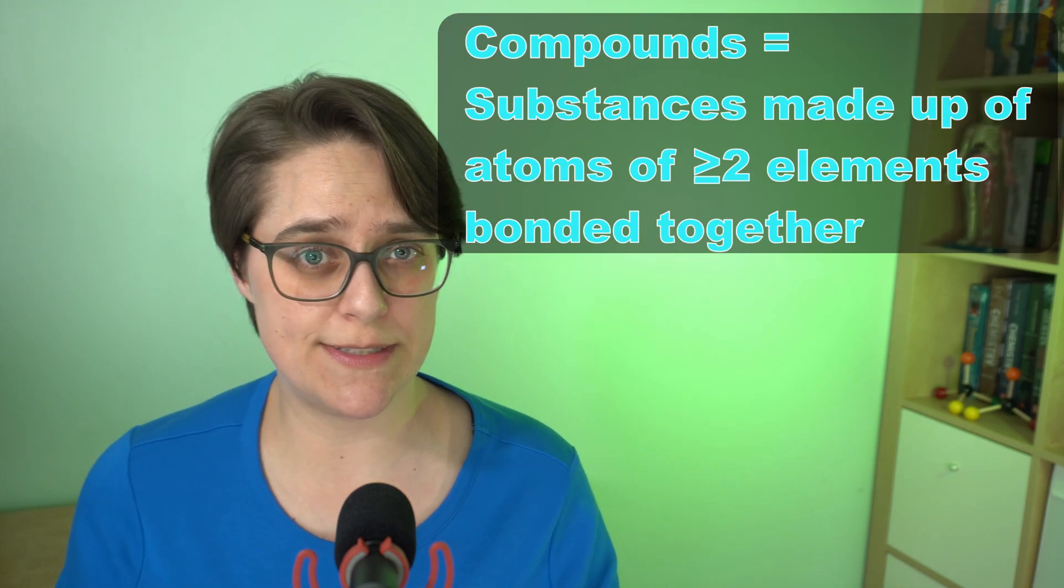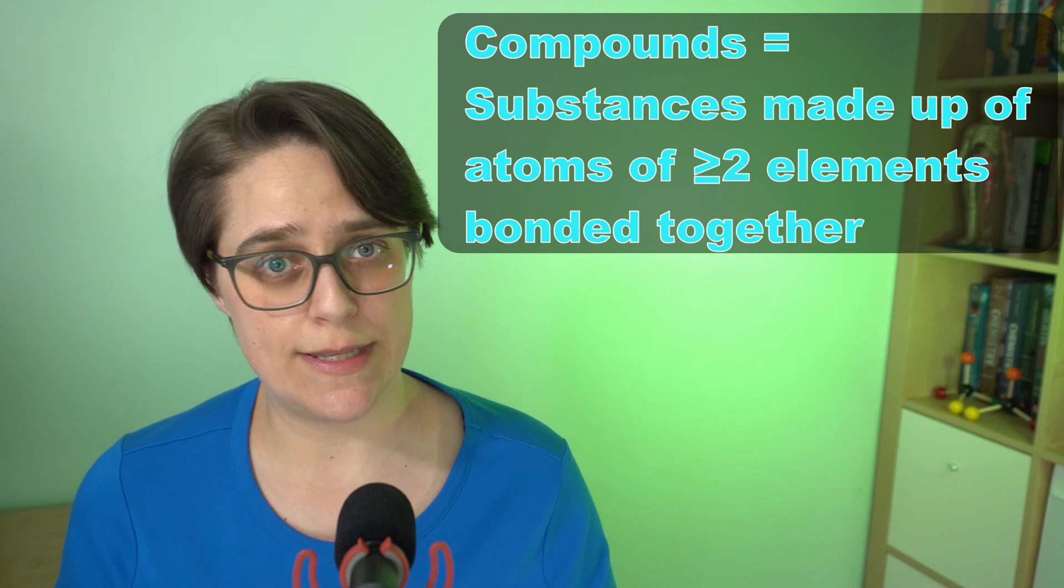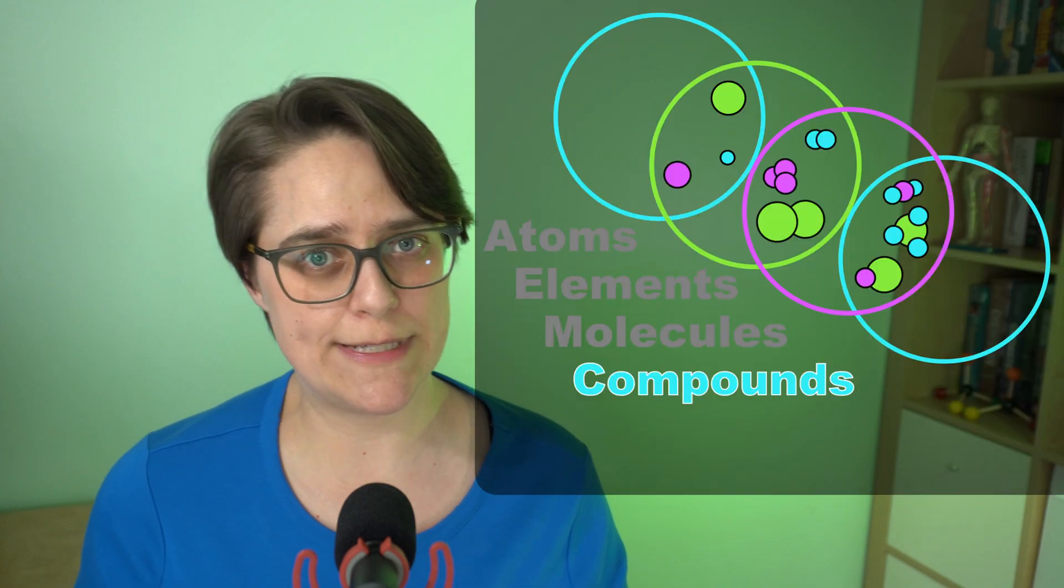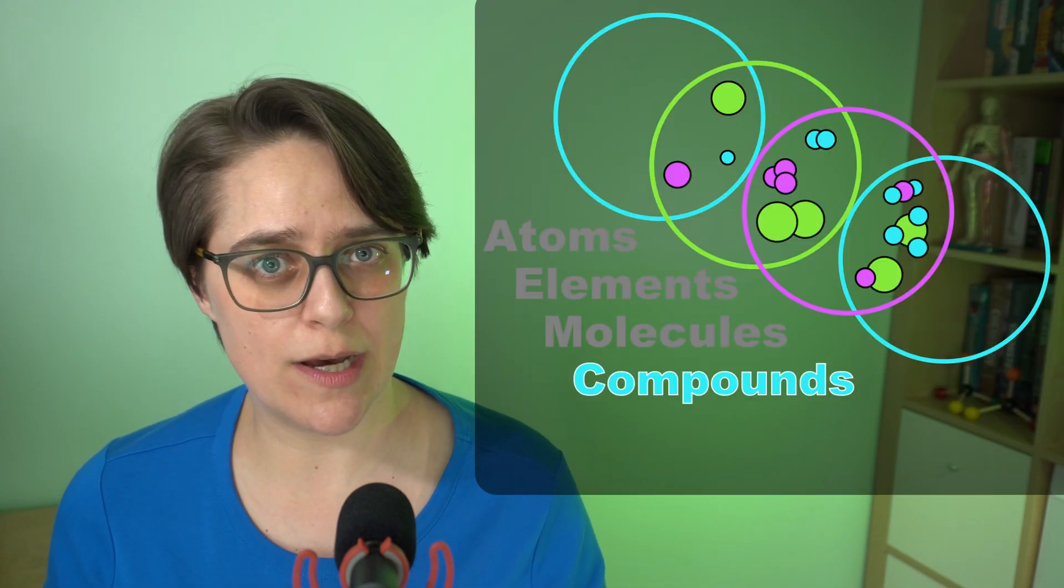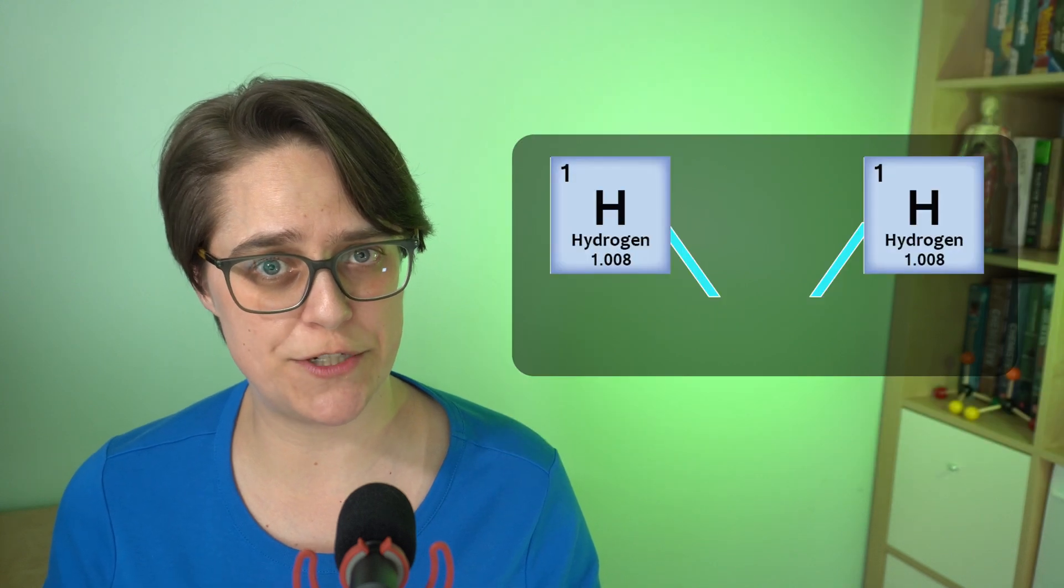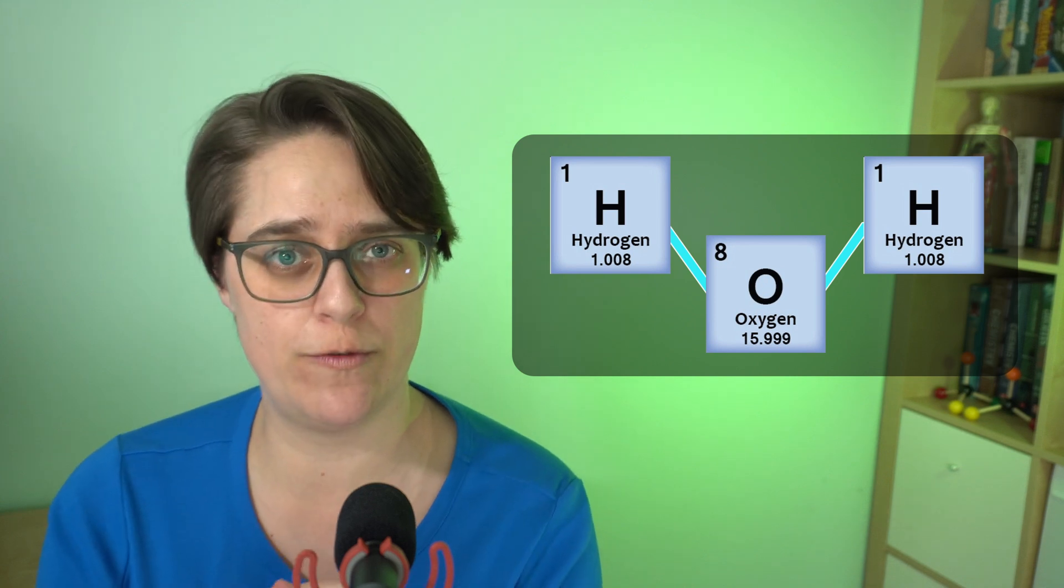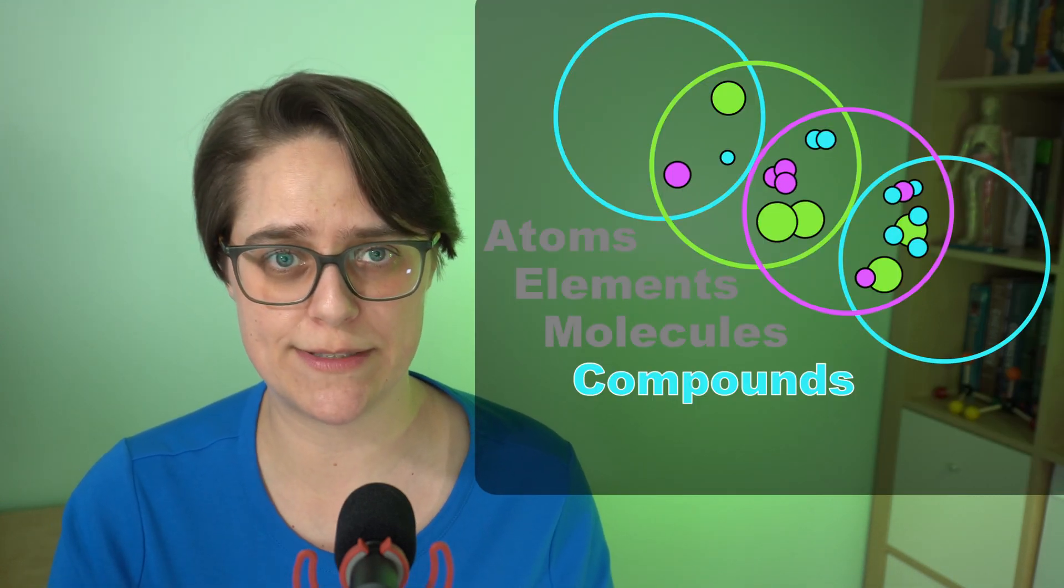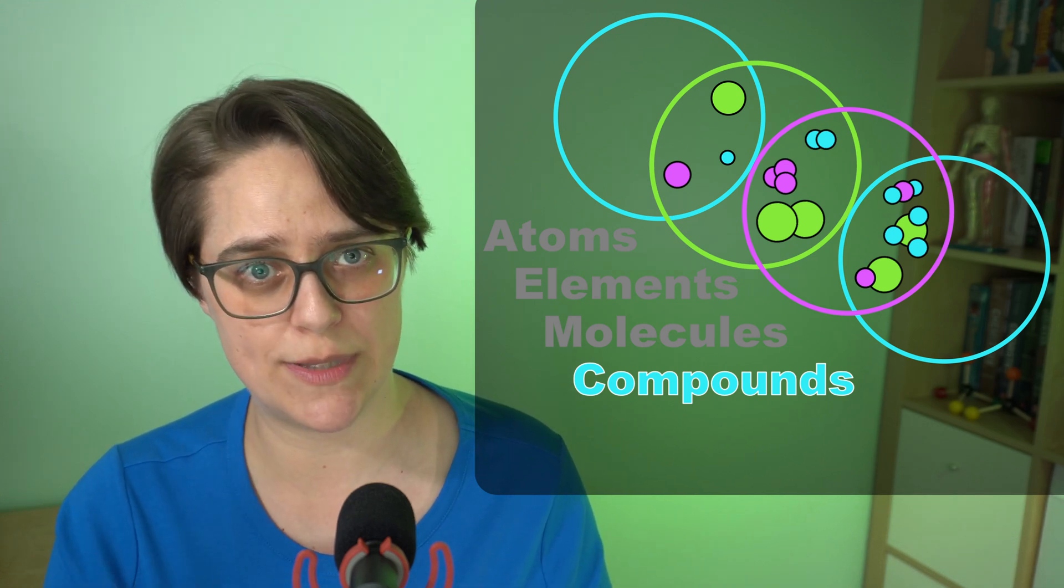Compounds are substances made up of atoms of two or more elements bonded together. They can be broken down into simpler substances by chemical means. For example, a water molecule, H2O, is a compound consisting of two hydrogen atoms and one oxygen atom bonded together. You can perform electrolysis to break water into separate elements, H2 and O2. Compounds can be broken down into elements.